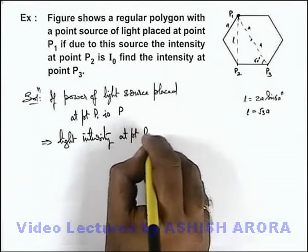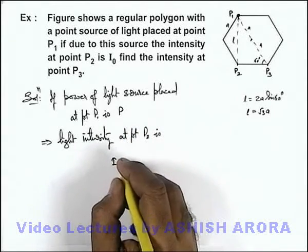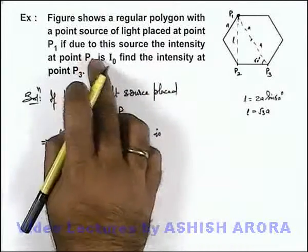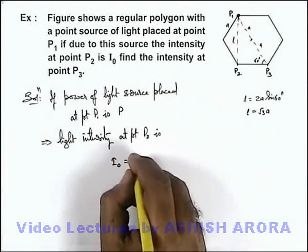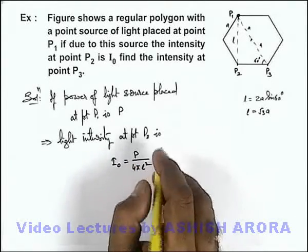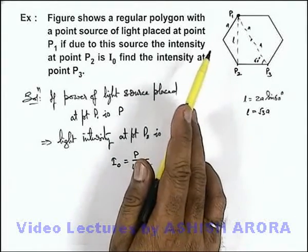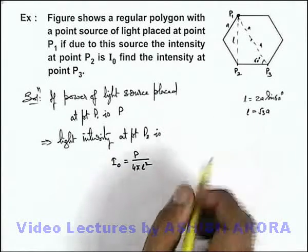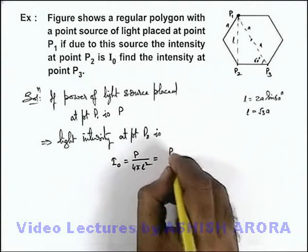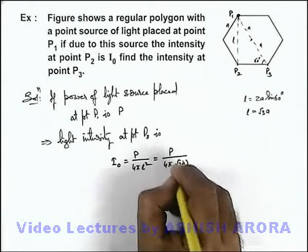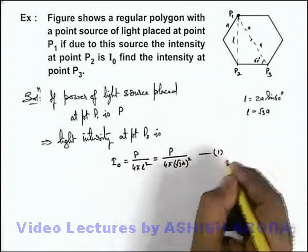We are given that this is I₀, which is the intensity at point P2. This we can write as P/(4πl²), as for a point source light is assumed to be distributed uniformly in all directions. If we substitute the value of l, this will be P divided by 4π(√3a)². Say we consider this as our equation 1.